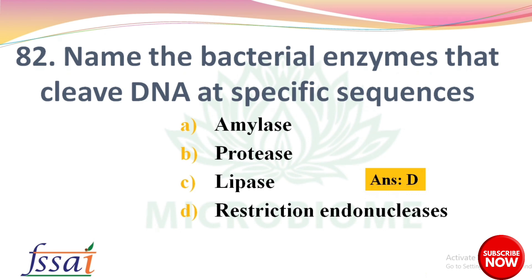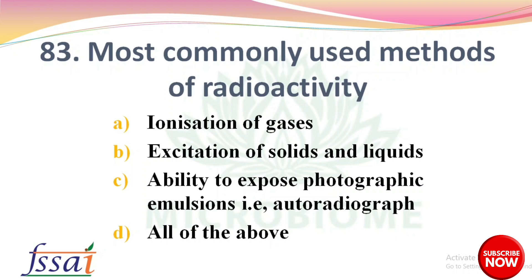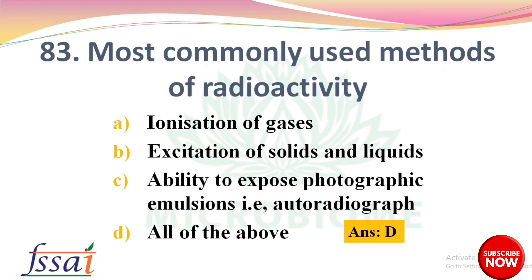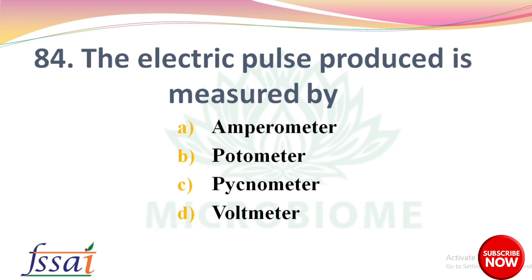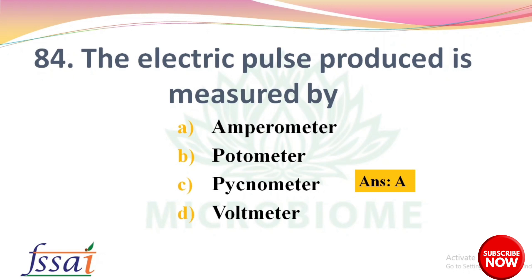The most commonly used methods of detecting radioactivity are — options: ionization of gases, excitation of solids and liquids, ability to expose photographic emulsions (autoradiograph), all of the above. The right answer: option D, all of the above. Next: the electric pulse produced is measured by — options: ambrometer, potometer, pycnometer, voltmeter. The right answer: option A, ambrometer. Next: in 1983, American company Eli Lilly produced the first genetically engineered human insulin, termed — options: humulin, none of the above. The right answer: option A, humulin.